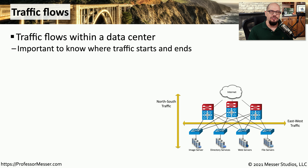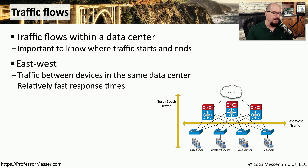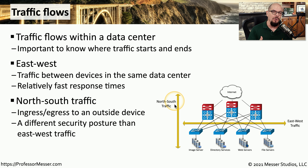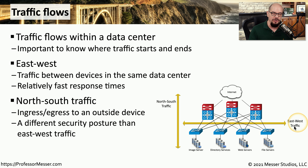When working inside a data center, it's useful to know where data is originating and where the destination is. We refer to the path between source and destination in directional terms. East-west traffic is traffic going between devices within the same data center — for example, communication between an image server and a web server inside the same data center. North-south traffic goes outside of our data center. Since north-south traffic leaves our control, we may apply different security postures compared to east-west traffic, which stays within our controlled network.